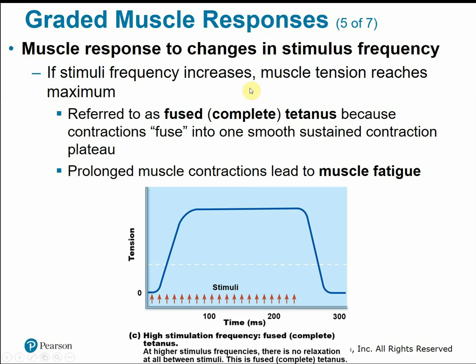Tetany or tetanus occurs with a large increase in stimulation frequency — back-to-back stimulation so the muscle cannot fully relax. This is called fused or complete tetanus, where contractions from separate stimuli are so close together they appear as one smooth, sustained contraction. Muscles contracted for a prolonged period cannot do so indefinitely — they will ultimately become fatigued.